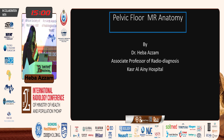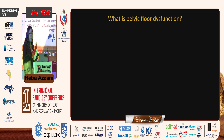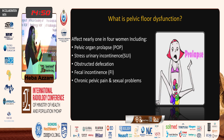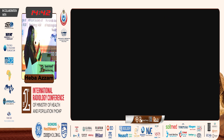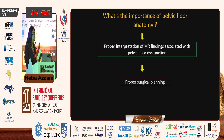Thank you, Dr. Rania, for the nice introduction. What is pelvic floor dysfunction? Pelvic floor dysfunction affects one in each four women. It can present with urinary incontinence, pelvic organ prolapse, fecal incontinence, obstructive defecation, sexual problems, or even chronic pelvic pain. Proper interpretation of MR findings associated with pelvic floor dysfunction is of utmost importance in order to do proper surgical planning, thus reducing the rate of re-operation, which is very high in pelvic floor cases, reaching 30% of cases.